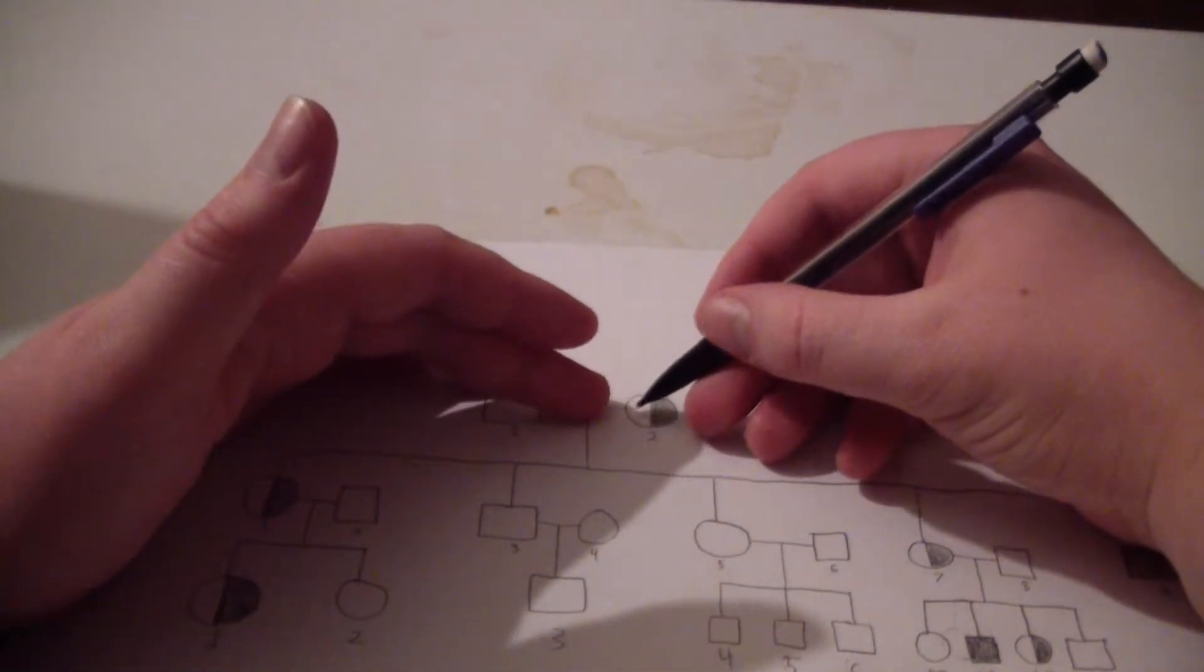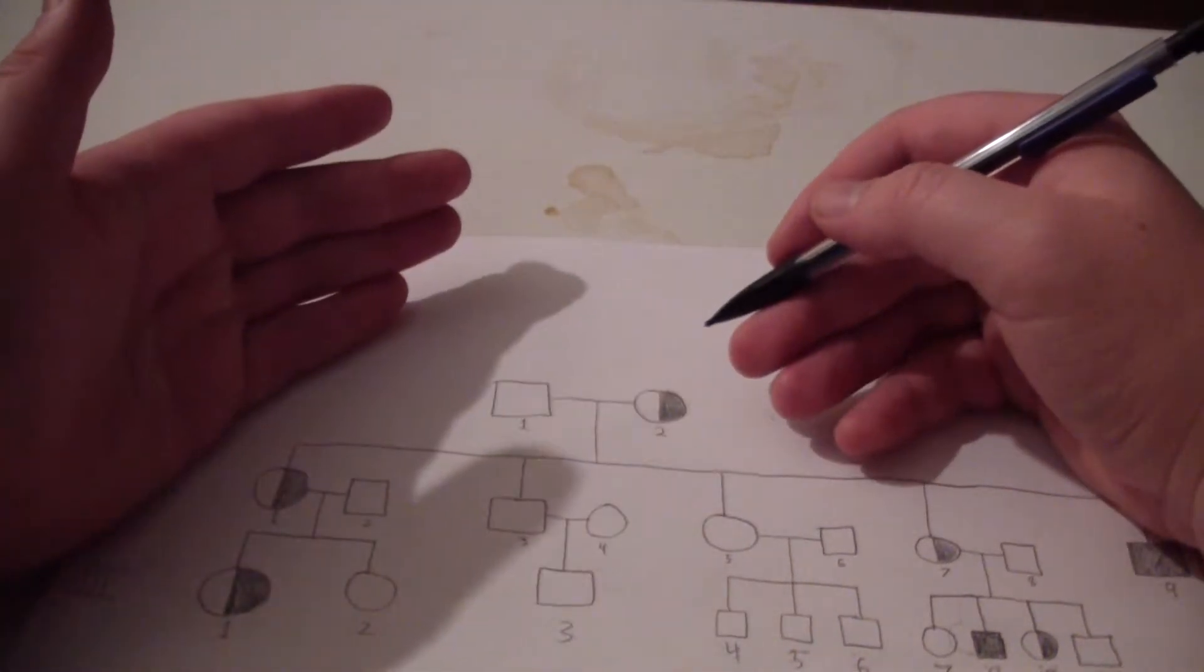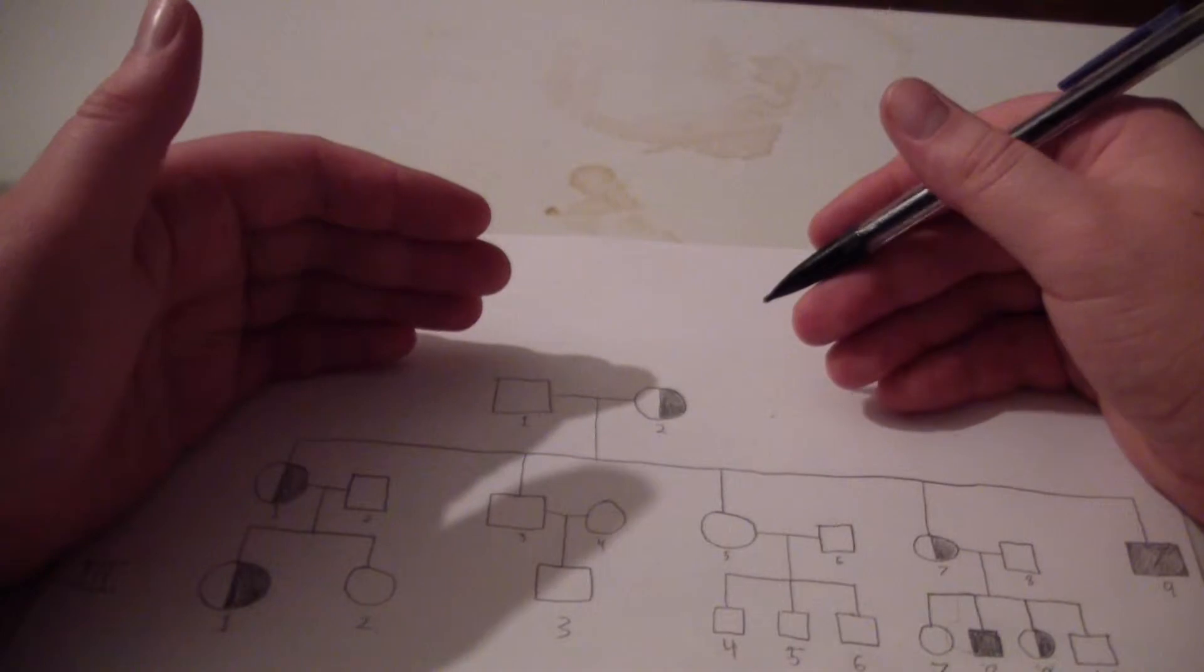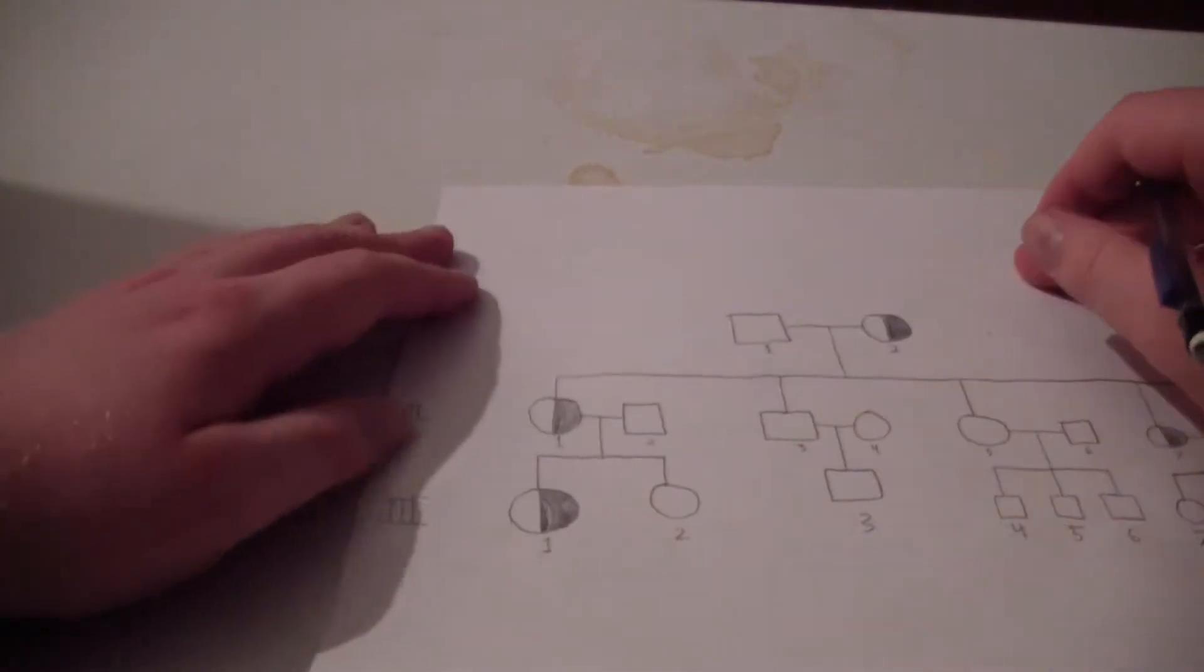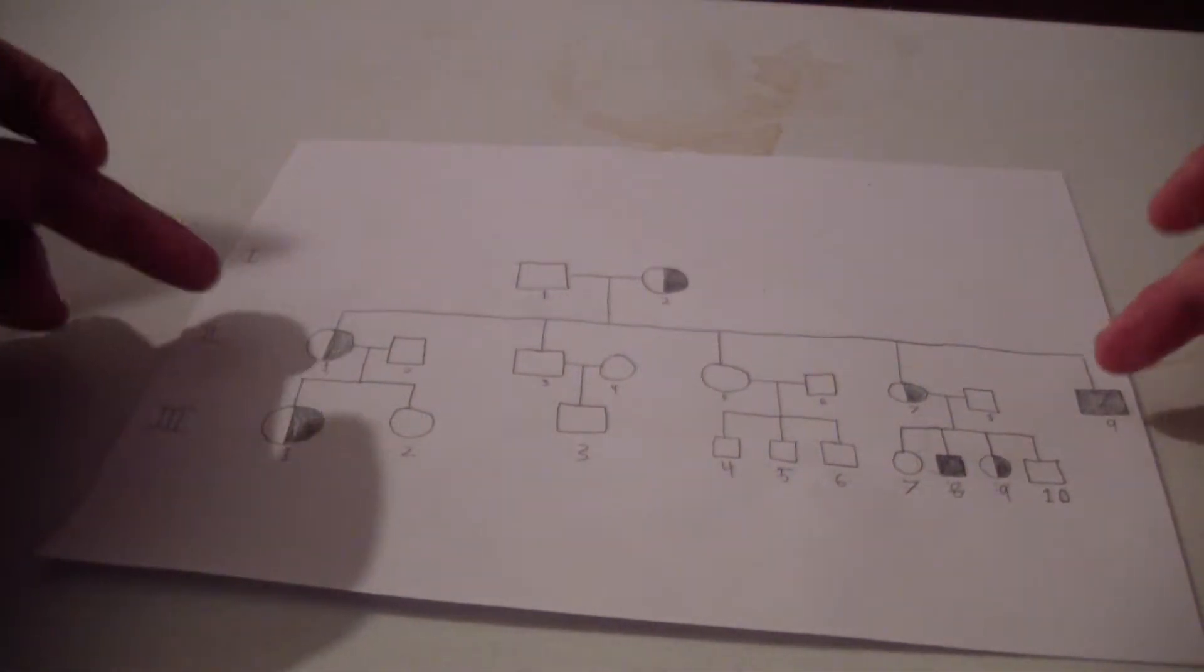She has another X chromosome though, so she has a healthy form of the enzyme and also has a mutant form. But the healthy form is able to compensate, hence the reason this is a recessive mutation. Now let's look at generation 2.